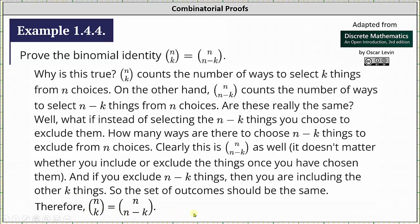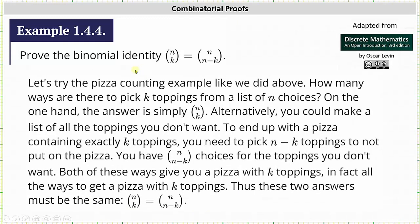And now let's look at a second combinatorial proof. For this combinatorial proof, we use the pizza counting problem we used before. How many ways are there to pick k toppings from a list of n choices? On one hand, the answer is simply n choose k.